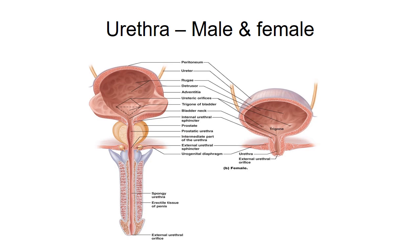Moving to the urethra: the male urethra has a length of 18 to 20 centimeters and has prostatic, membranous, and spongy parts. The widest part is the prostatic part and the least dilatable part is the membranous part. The female urethra is four centimeters long and corresponds to the prostatic urethra in males. There are two sphincters: the internal sphincter, which is not a true anatomic sphincter and is supplied by sympathetic nonadrenergic nerves, and the external sphincter, composed of skeletal muscle and supplied by somatic pudendal nerves.